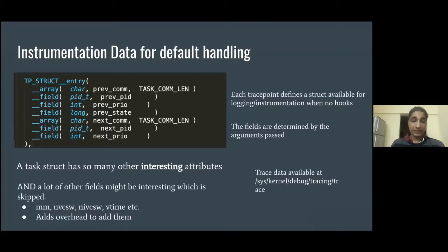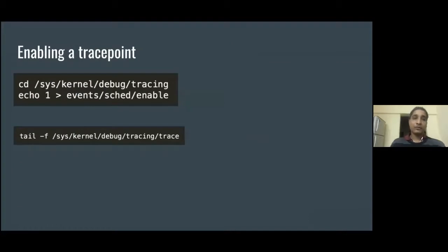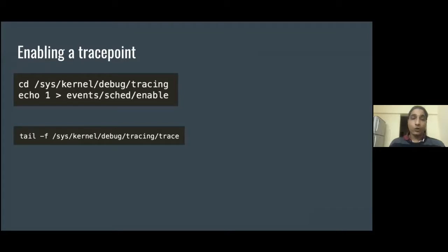A user might be interested in logging the memory descriptor, the non-voluntary context switches, or the runtime attributes of the task, and the default macro doesn't log them. So we have to define a custom program to start logging them. Trace points are not enabled by default — we have to enable a trace point by running this echo command. Once this command is run, the trace points are enabled and the logs start accumulating at this particular location. If we look at this particular location, we can see the logs being instrumented by the kernel if we do not define a particular hook.